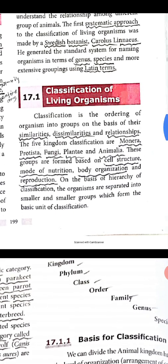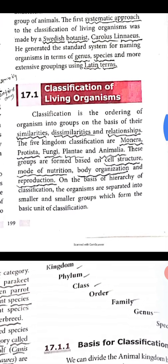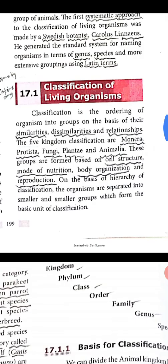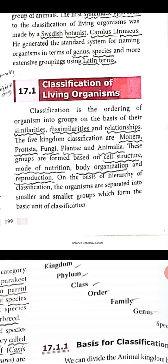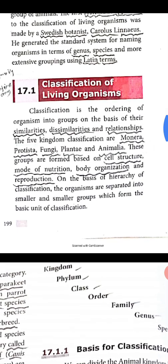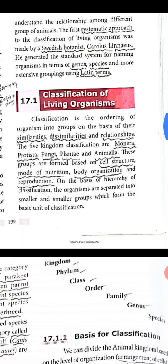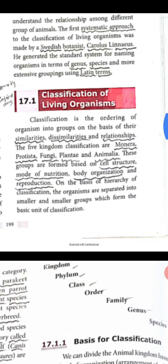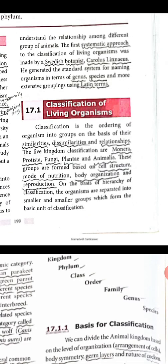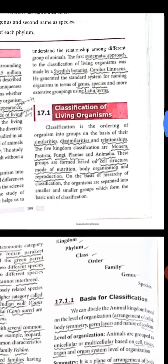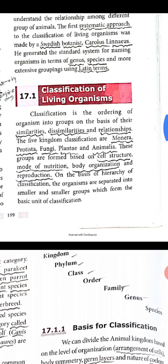These groups are formed based on cell structure, cell type, and mode of nutrition, body organization, and reproduction. On the basis of classification, organisms are separated into groups which are converted into smaller and smaller groups, forming the basic unit of classification.